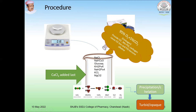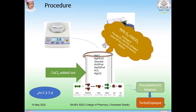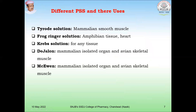Aeration helps in mixing the physiological salt solution, but it can cause loss of oxygen and PSS becomes alkaline. You should maintain the pH of the PSS between 7.3 and 7.4. Once the PSS is formed, you can preserve it for 24 hours, but it is recommended that whenever you need PSS, you prepare it freshly for bioassay purposes.